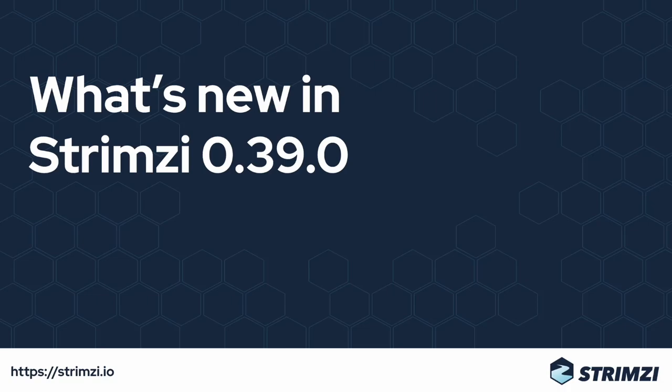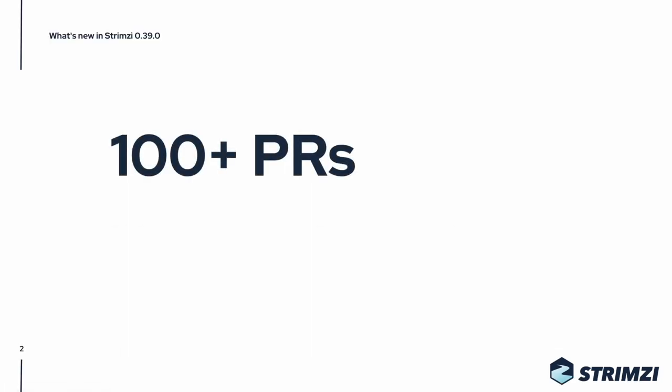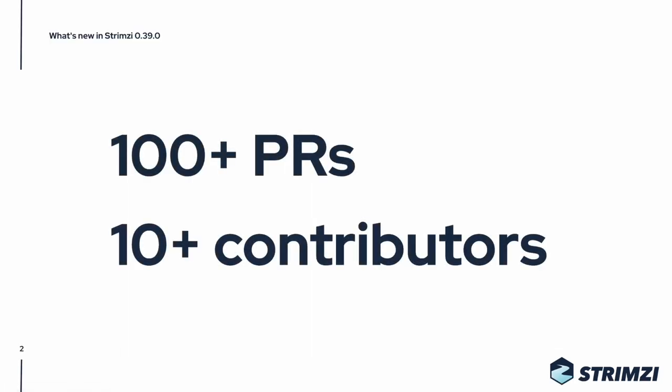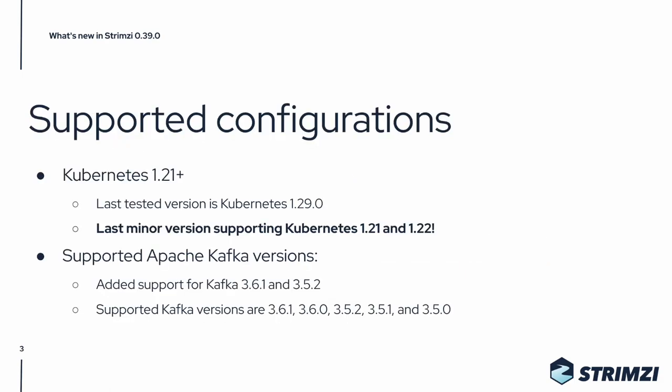Strimzi 0.39 is out and in this video we will have a look at the main changes. This release has over 100 PRs from over 10 different contributors. It supports Kubernetes 1.21 and newer, and the last tested version is Kubernetes 1.29.